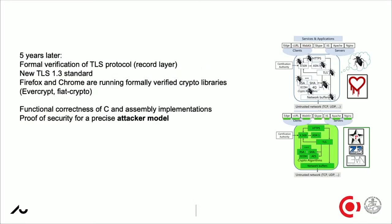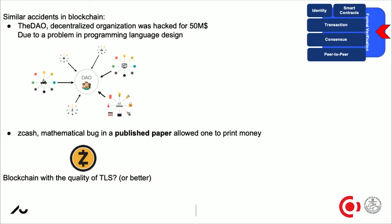What they actually do is prove the correctness of the C and assembly implementations of those libraries and prove security against a precise attacker model. Now, why am I mentioning this TLS bug? Because there's something very similar going on in the blockchain space — enormous accidents have happened. One very famous is the DAO — a distributed funding organization, the idea being to have something like an industry fund on the blockchain, where people could make proposals and vote on them.